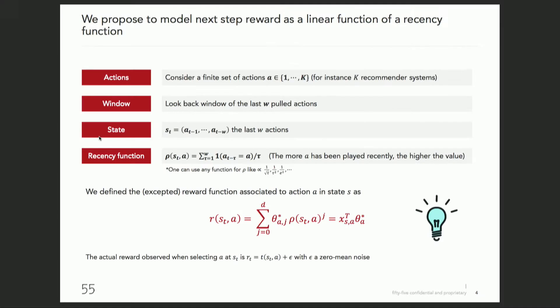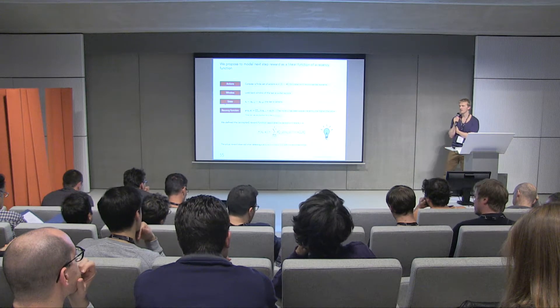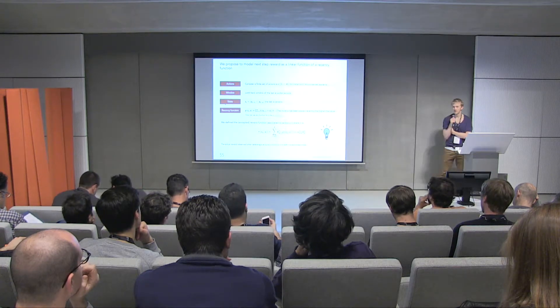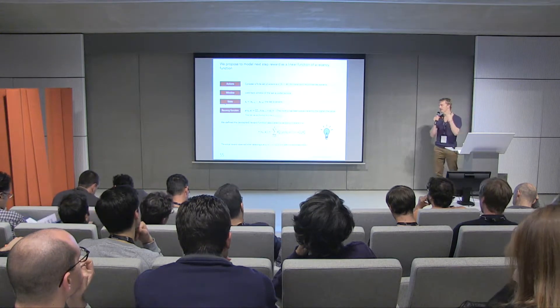In order to model this behavior, we are going to consider a set of actions from 1 to k, where k is the number of recommender systems we want to test. We define a look-back window of size w that defines the state as the last w actions shown to the user. Based on that, we can define a recency function that, for a given state and action, gives a penalty of 1 over t at the time steps where we played this action.